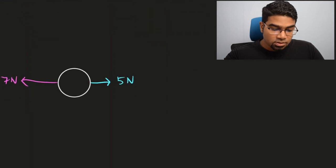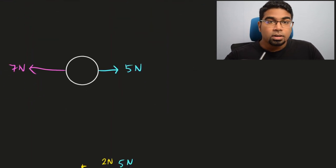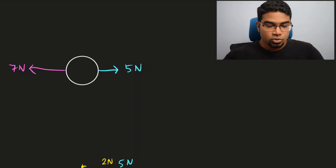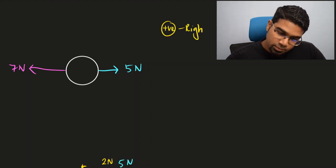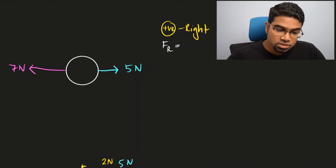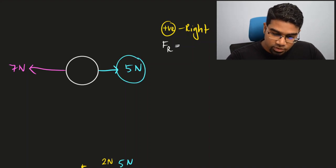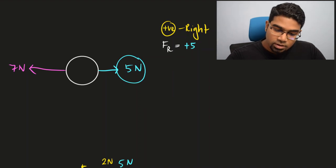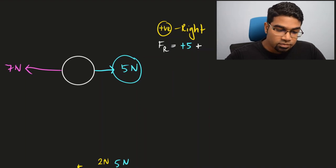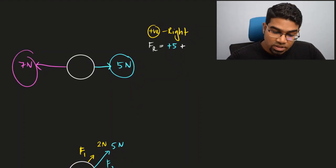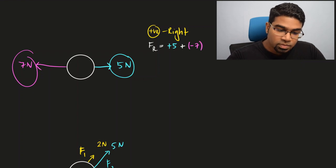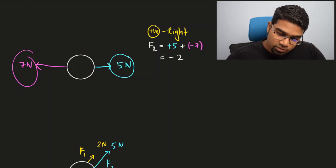Let's look at another example. Again I'm choosing to assign right as the positive direction — which direction is positive is entirely up to you. When we want to find the resultant force, all we have to do is sum up all the forces. In the right direction we have 5 newtons, so let's write positive 5. Now we add the force in the opposite direction which is 7 newtons — 7 newtons is in the left direction, so we assign it a negative value: negative 7. This gives us negative 2 newtons.